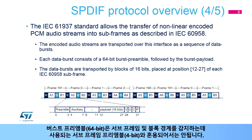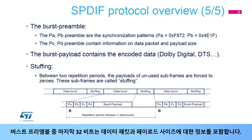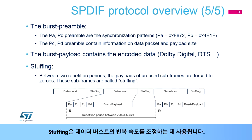Note that the burst preamble (64 bits) shall not be confused with the subframe preamble (4 bits) used to detect the subframe and block boundaries. The first 32 bits of the burst preamble are a fixed pattern, PA and PB. The last 32 bits contain information on data packet and payload size. Stuffing is used to adjust the repetition rate of the data bursts.